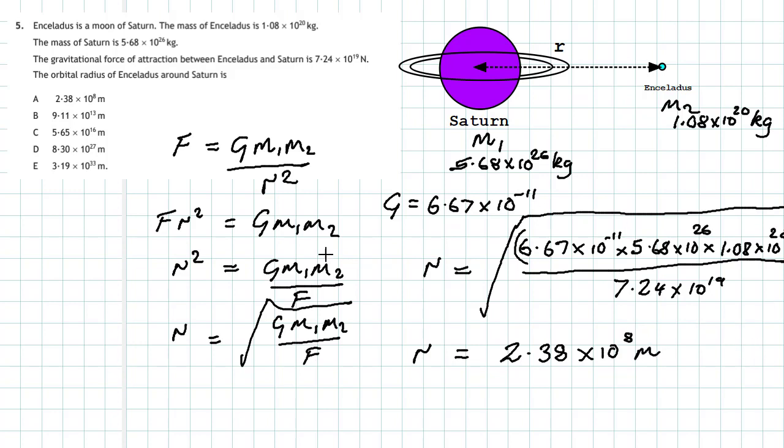That gives us answer A. A few tips: you must be ready to rearrange the universal law of gravitation, and you should always draw a small diagram to visualise the problem. When doing the calculation, remember that to find the radius you must take the square root, and bracket your expression properly when entering it into your calculator. Check that your answer is sensible — 2.38 times 10 to the power 8 metres is reasonable.